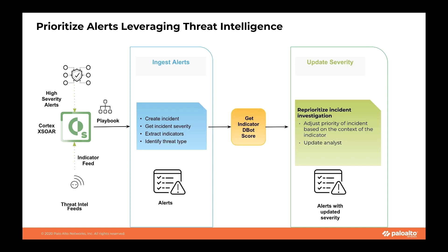Many times, new alerts generated from different alert sources have incident severity levels and priority that may not correctly reflect the actual priority that security teams might assign post investigation. This results in many resources being wrongly assigned to lower-priority incidents instead of being aligned to incidents of actual high severity. If the indicators related to high severity incidents pose lower risk, then the incident severity needs to be automatically reduced to save precious analyst time.